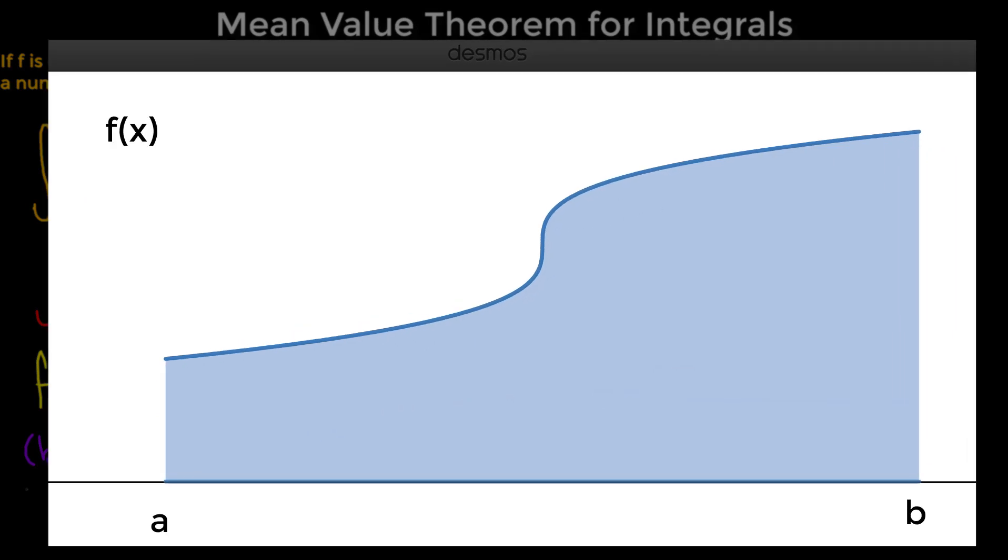Again, the definite integral from a to b represents the shaded area. Now, if we remove the shading, the mean value theorem means that we can make a rectangle that will have the same area as the definite integral from a to b.